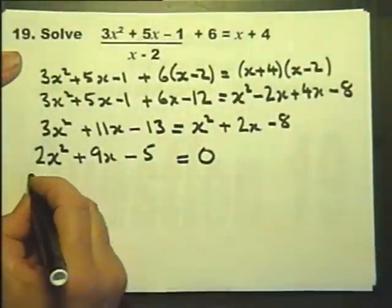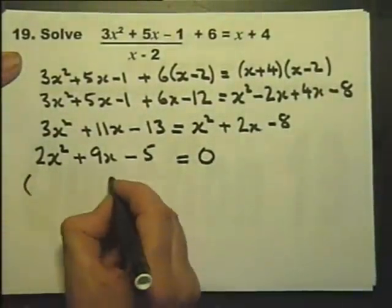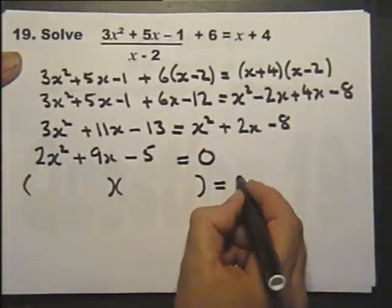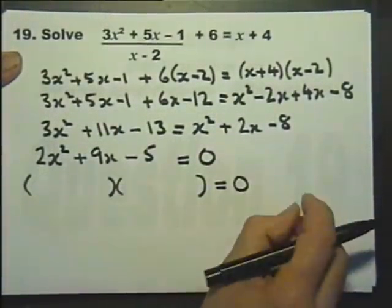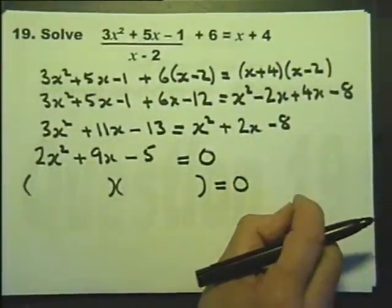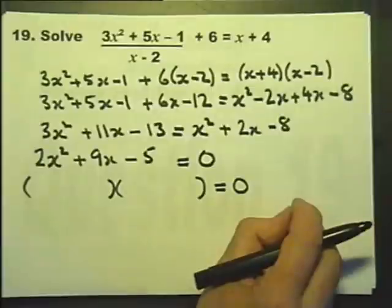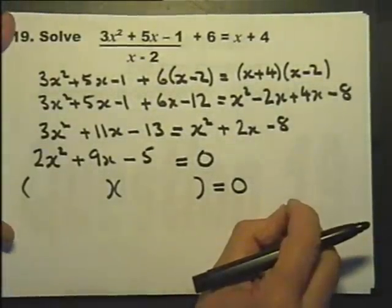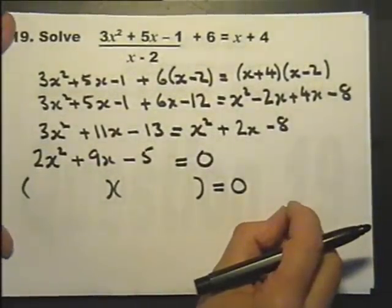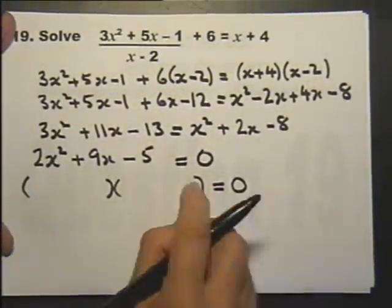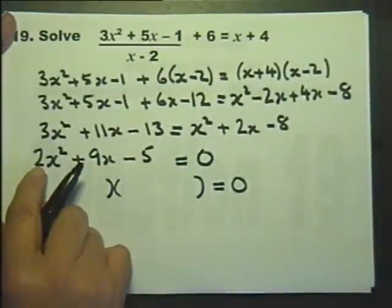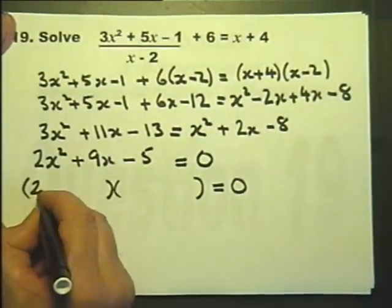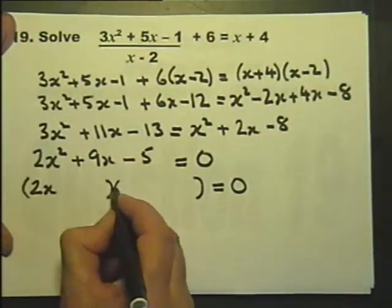Now, if the examiner's being nice, this should factorise. If not, I'd have to use the formula, but I'd expect that to only happen on the calculator paper. So I do expect this to factorise. Thankfully, that's a prime number and that's a prime number, so the choices are limited.